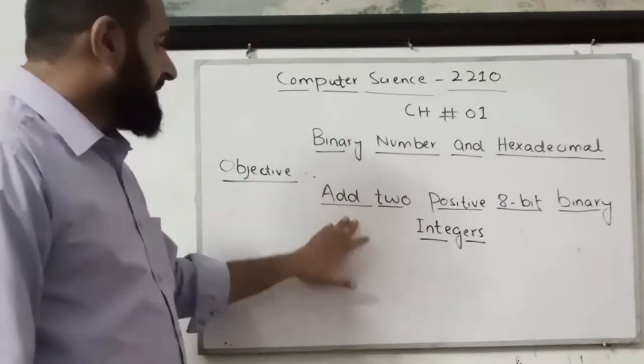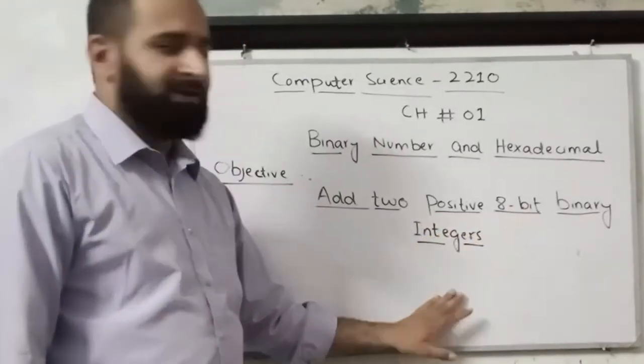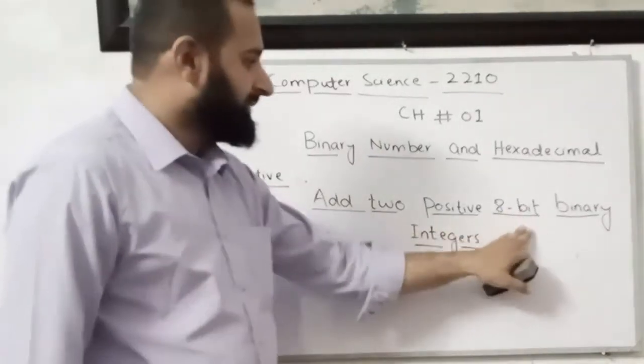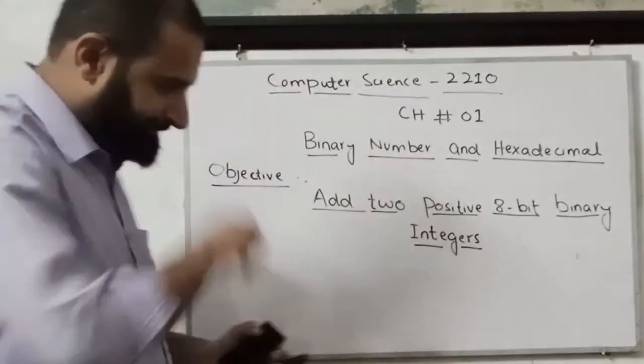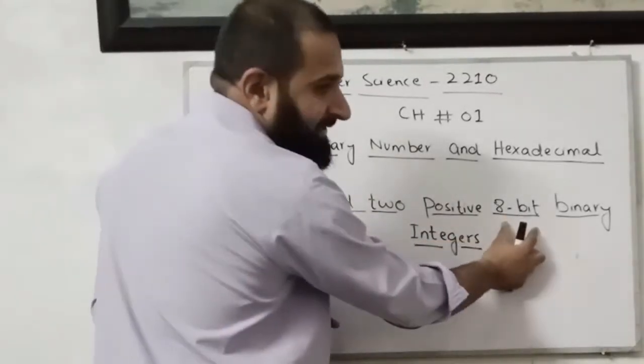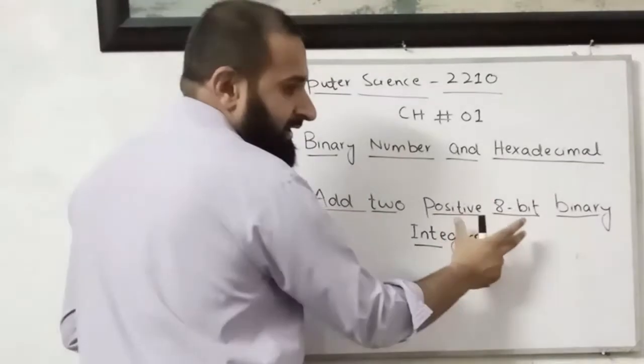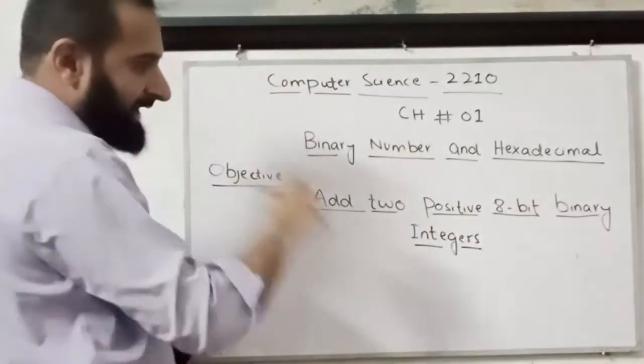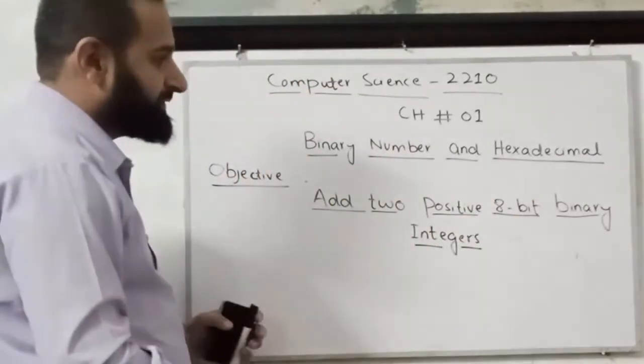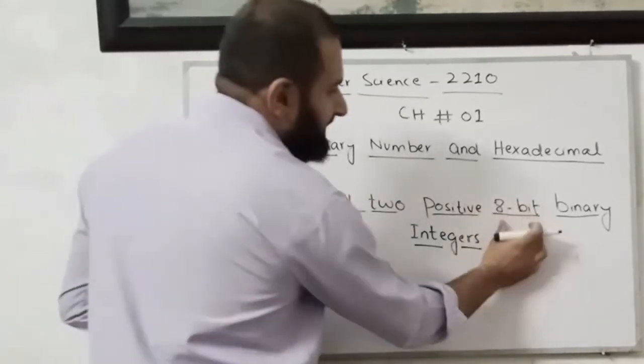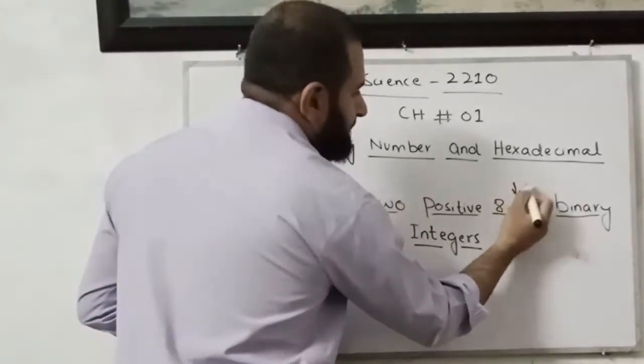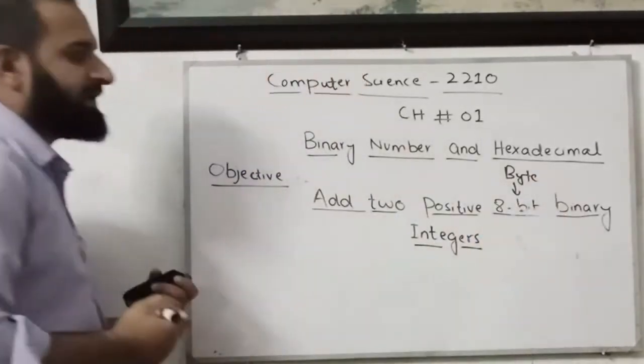Today our objectives are: add two positive 8-bit binary numbers. So what is 8-bit? Positive 8-bit means this is one byte of information and those all are positive values. So let's add these positive 8-bit binary values. This is what 8-bit means - it's called one byte of information.